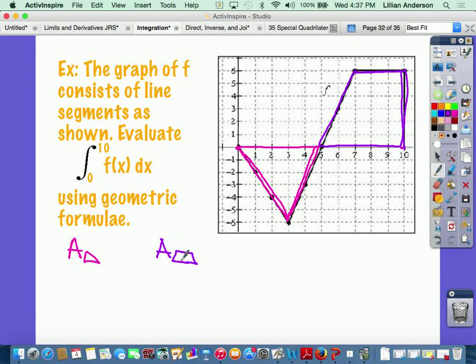You remember your formulas to find the area of those? I hope so. To find the area of the triangle is one-half base times height. Your base is five units long. Your height is six units long. And technically it's negative six because it's below the x-axis.